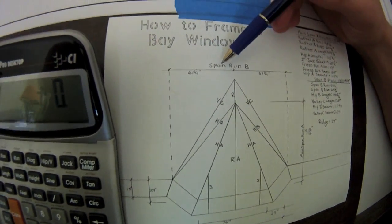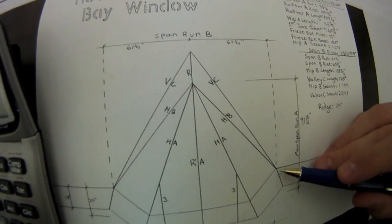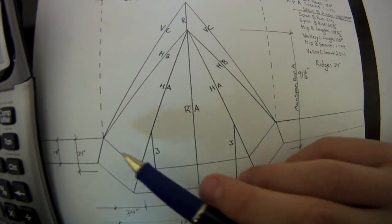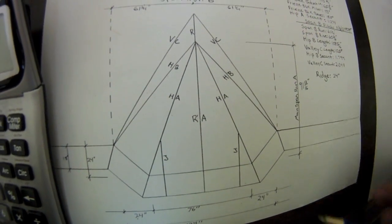As we see here, we have span run B already dictated, and this is relatively easy to figure out because as you can see, your valley starts from the inside corner of your bay. So from corner to corner is how you would come up with your span for run B.